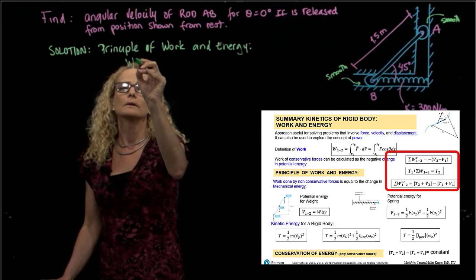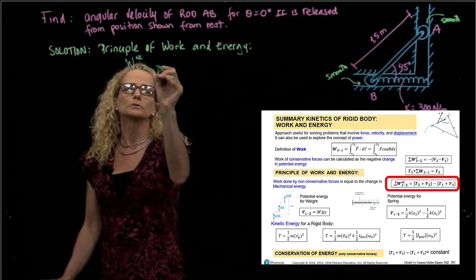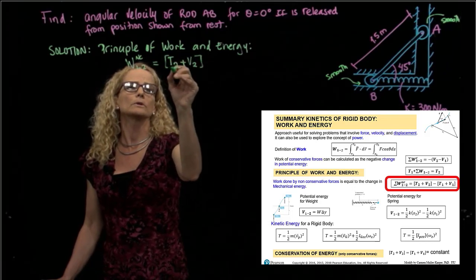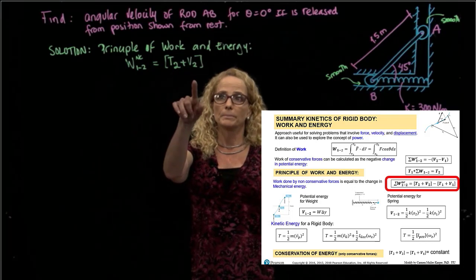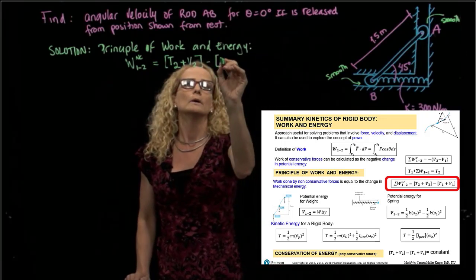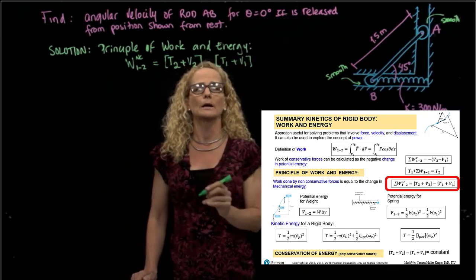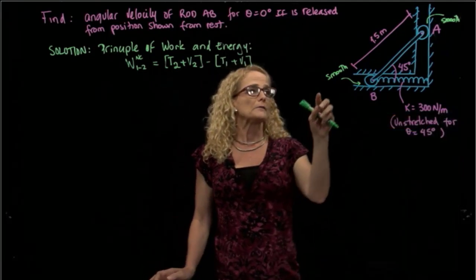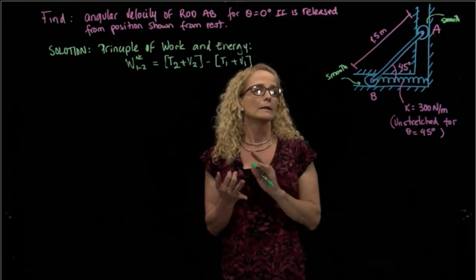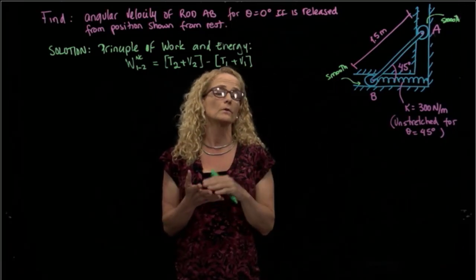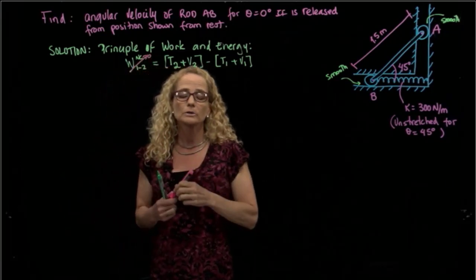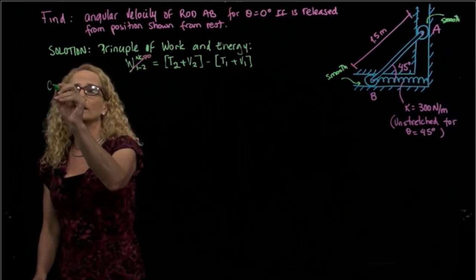The way I like to write it is: the work done by non-conservative forces from position one to position two equals the total energy at position two — kinetic energy plus potential energy — minus the kinetic energy and potential energy at position one. Since we have a smooth surface, and the other forces involved — weight and the spring — can be treated as conservative forces, the work of non-conservative forces is zero.